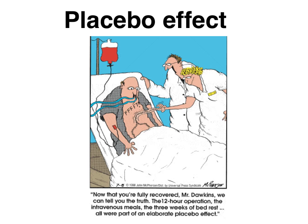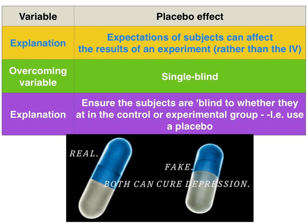A placebo effect is where the expectations of subjects can have an extraneous effect on the DV — hence the results — rather than purely the manipulation of the independent variable. In terms of a practical example, let's go with painkillers. There's a natural endorphin in your brain called opiate which has painkilling properties, which can be activated either by the actual painkiller, or a placebo — i.e., the mere belief that a drug has painkilling properties.